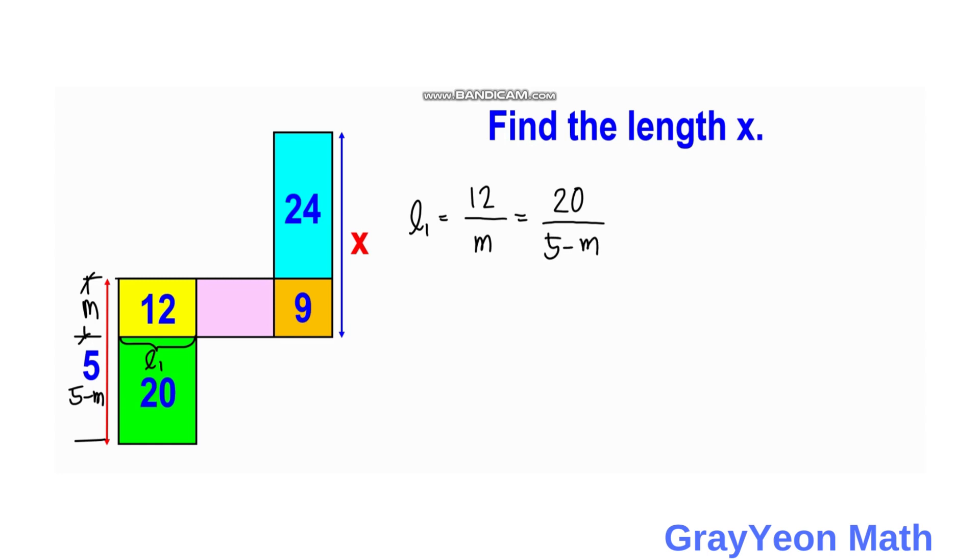So we need to cross multiply this. So 12 times 5 minus M is equal to 20M. So next is we multiply this and this, so we have 60 minus 12M is equal to 20M.